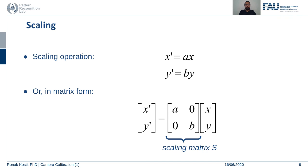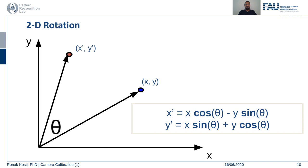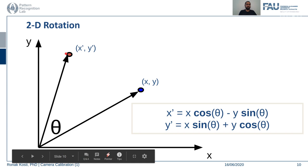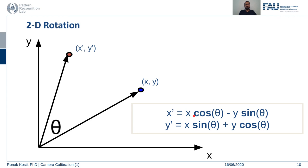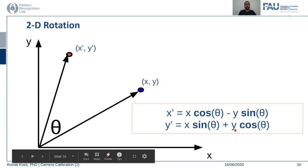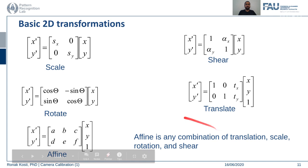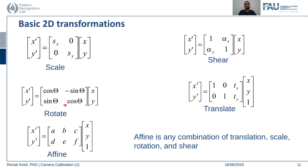Rotation can be represented by equations where an x-y point is rotated by an angular value theta. x-prime equals x·cos θ minus y·sin θ, and y-prime equals x·sin θ plus y·cos θ. This can also be represented in matrix form. Similarly, all 2D basic transformations — scaling, rotation, shear — can be represented as matrix multiplications.